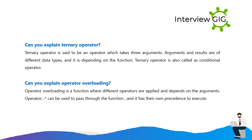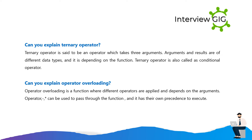Can you explain ternary operator? Ternary operator is said to be an operator which takes three arguments. Arguments and results are of different data types and it is depending on the function. Ternary operator is also called the conditional operator. Can you explain operator overloading? Operator overloading is a function where different operators are applied and depends on the arguments. Operators can be used to pass through the function and they have their own precedence to execute.